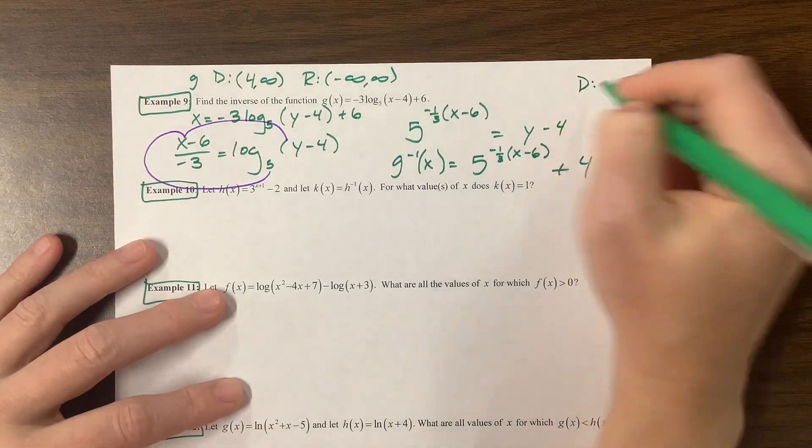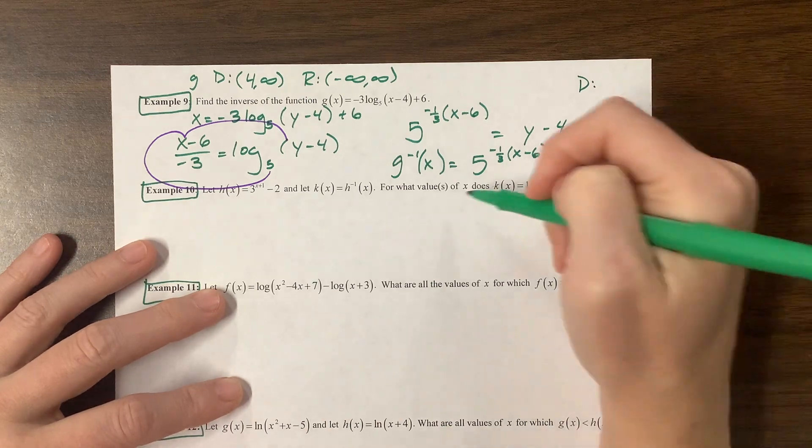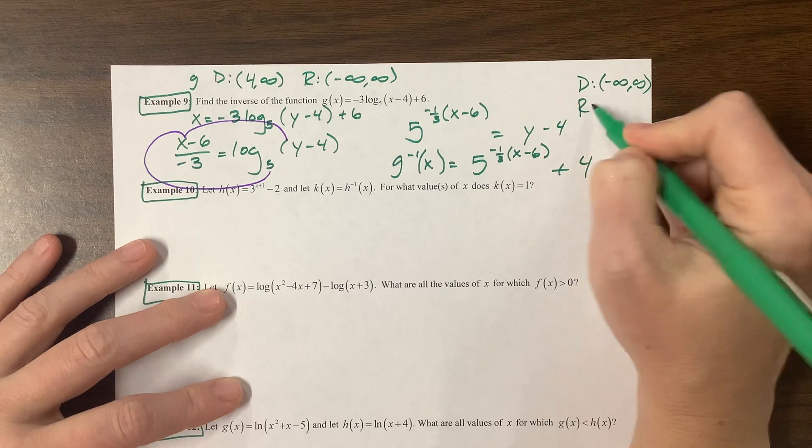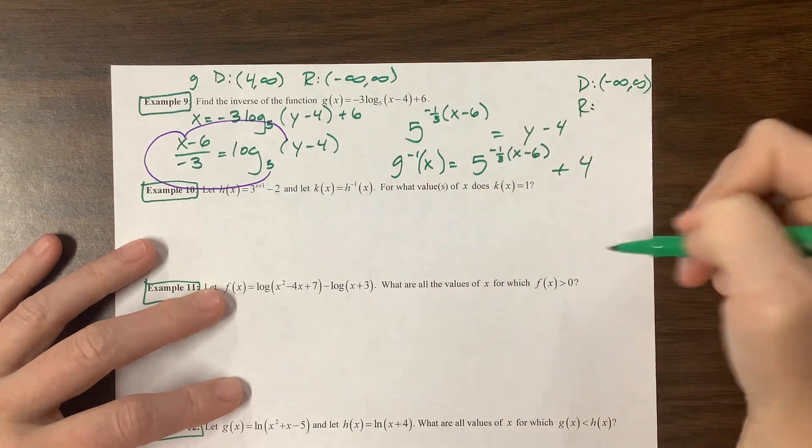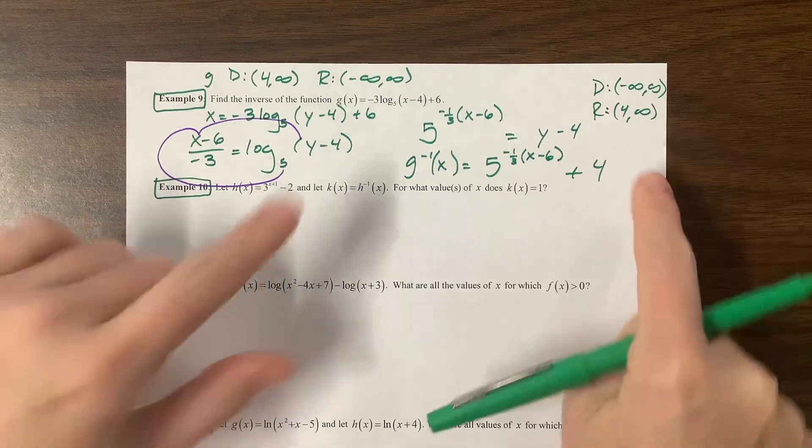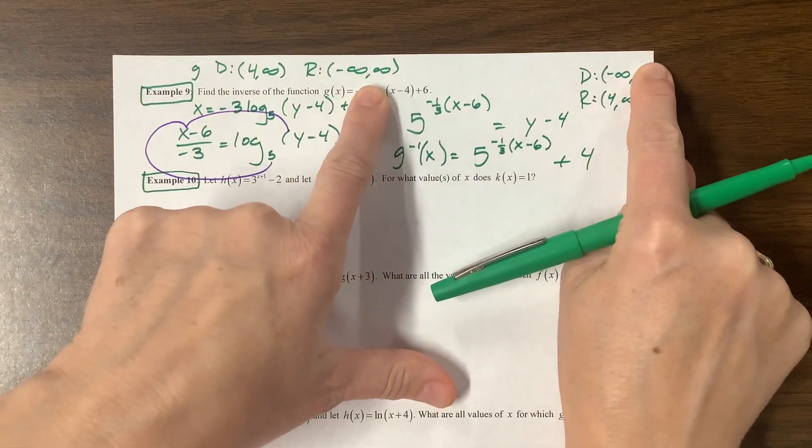So what's the domain of this guy? The domain of this guy, it would have been, well, the domain of an exponential is all real. The range, that's what I meant, would have been from 0 up to infinity, but now we've moved it up 4, so we're 4 to infinity. And sure enough, they correspond. So that's good.